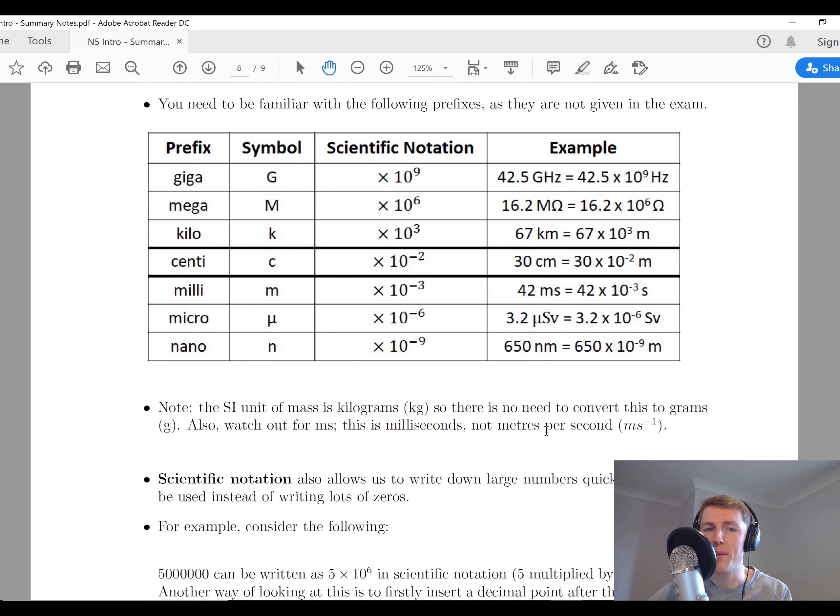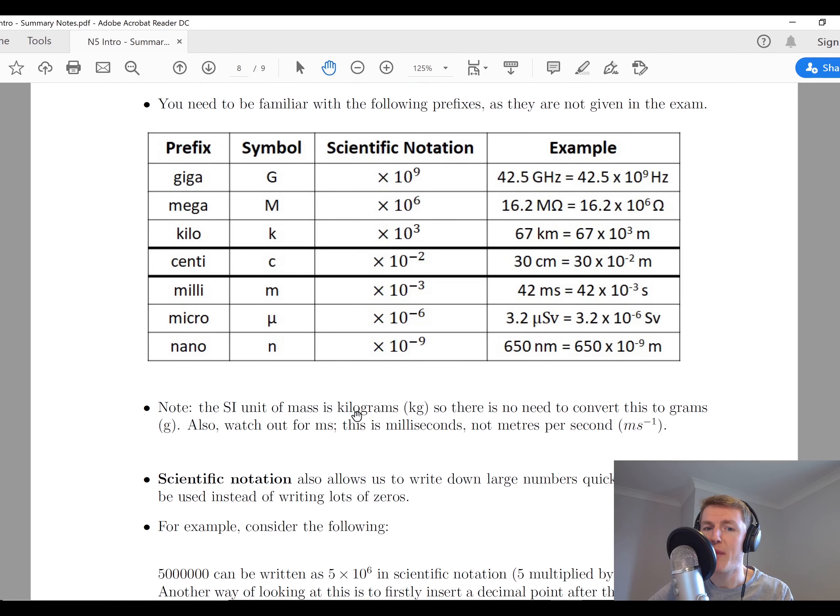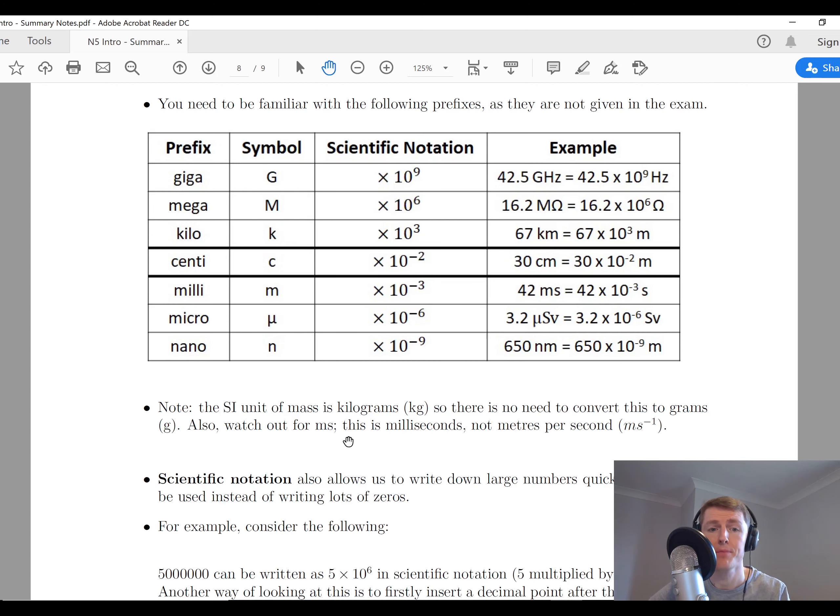Then some warnings that I've put just below it, which is that the SI unit of mass we saw on the previous page was kilograms. So we don't have to convert the kilo part of kilograms into grams, because grams is not the SI unit of mass. We use kilograms. Another one to watch out for is milliseconds, which is MS, and this is not meters per second. Meters per second is MS to the power of minus 1, whereas milliseconds is just MS. So don't get confused between the two, because they look quite similar.